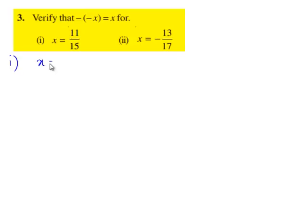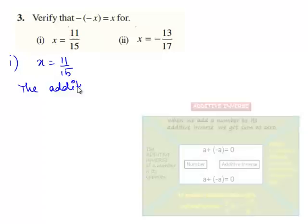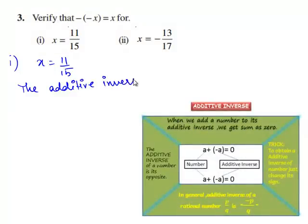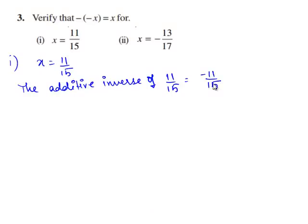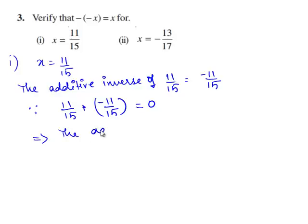For x is equal to 11 by 15, the additive inverse of 11 by 15 is equal to minus 11 by 15, since 11 by 15 plus minus of 11 by 15 is equal to 0. This same equality implies that the additive inverse of minus 11 by 15 is 11 by 15.